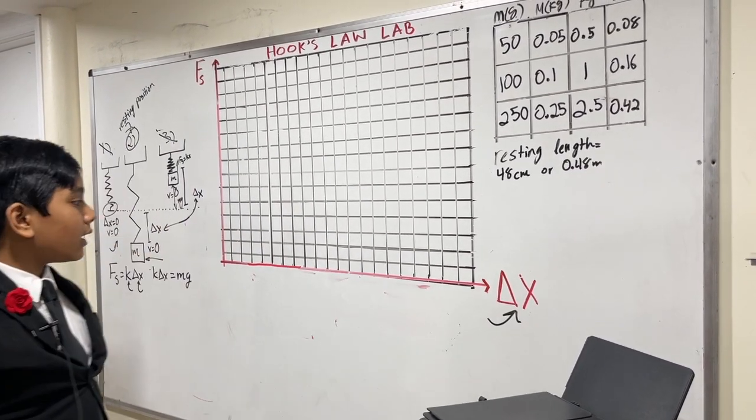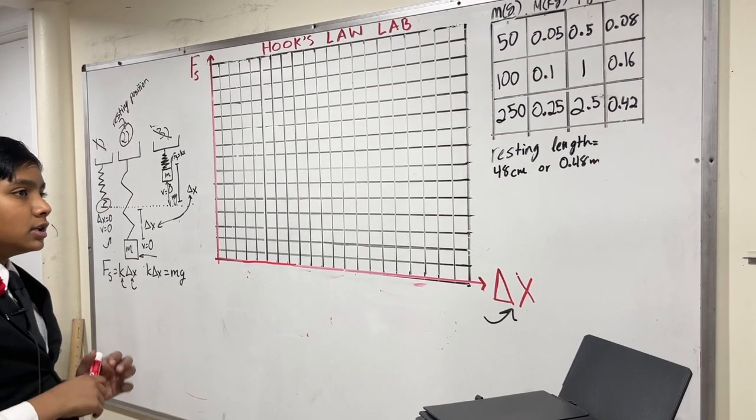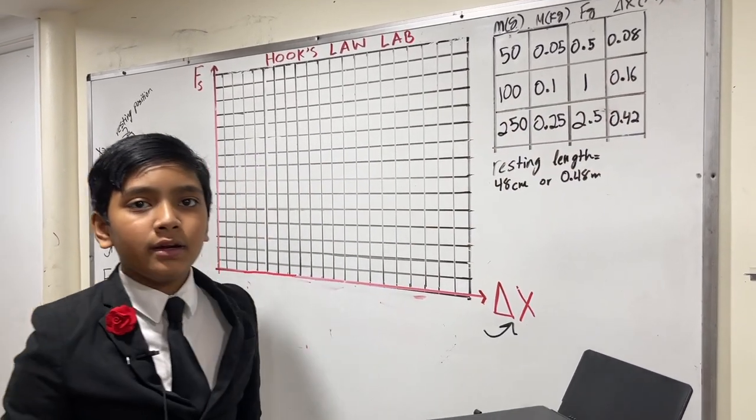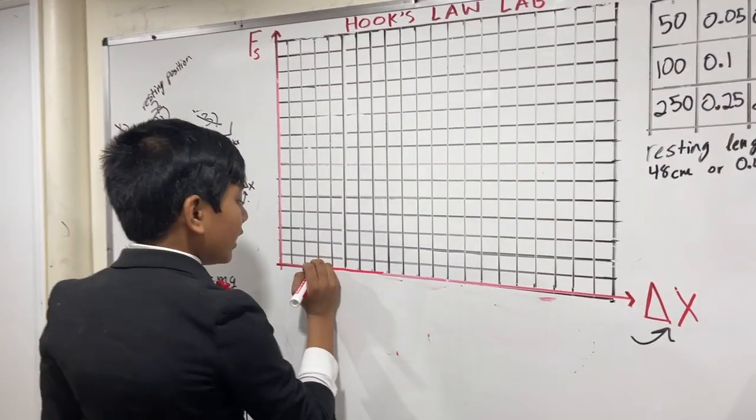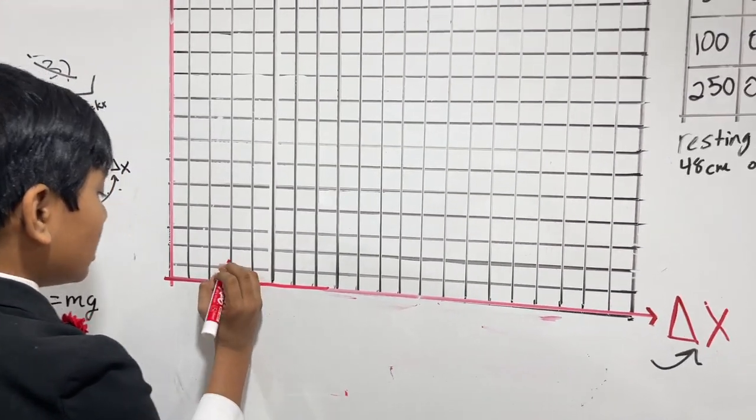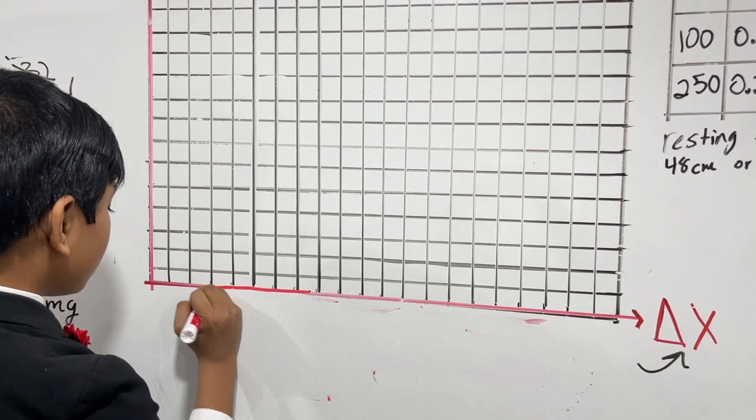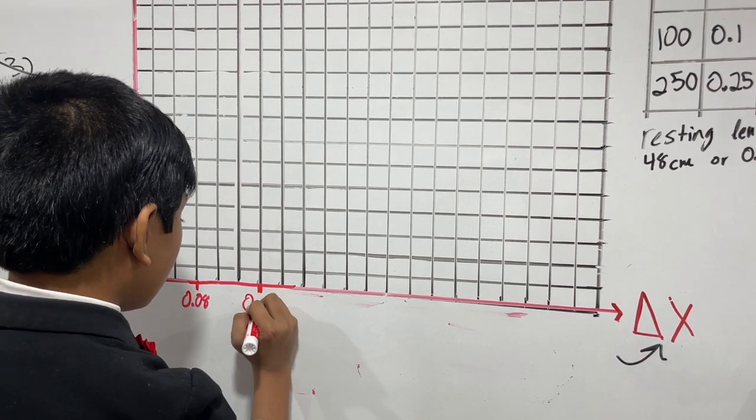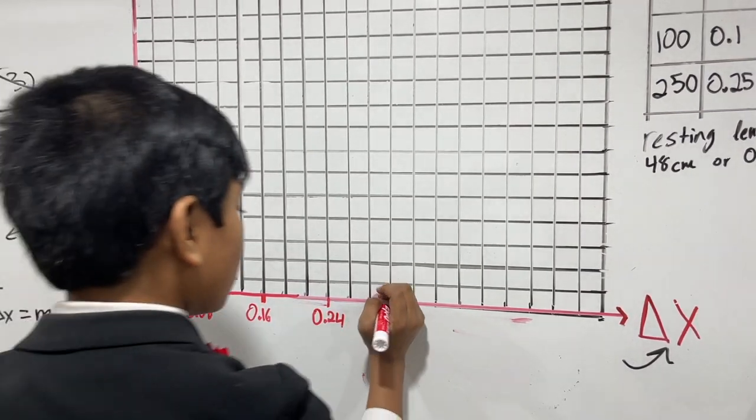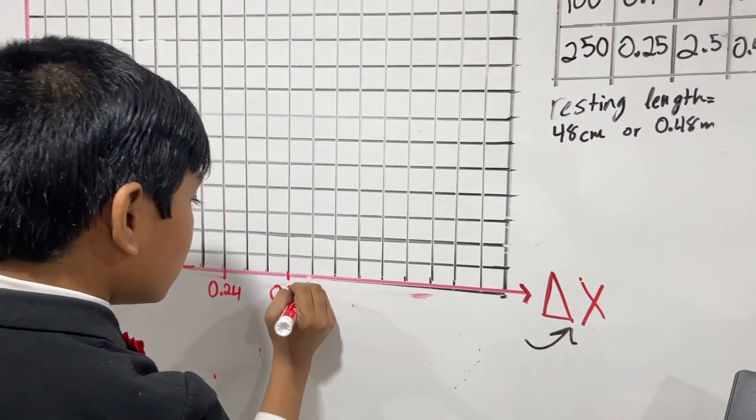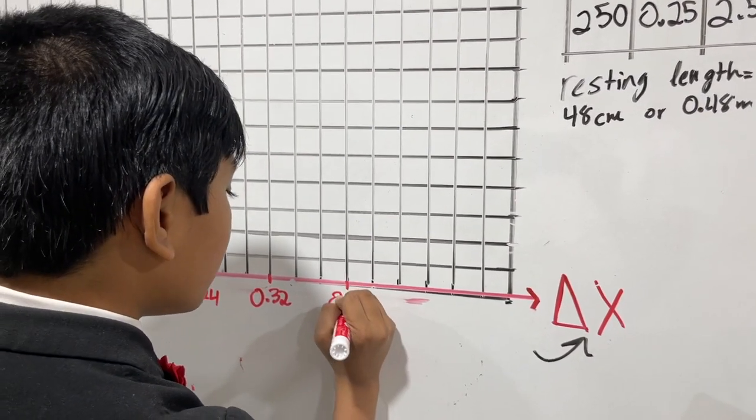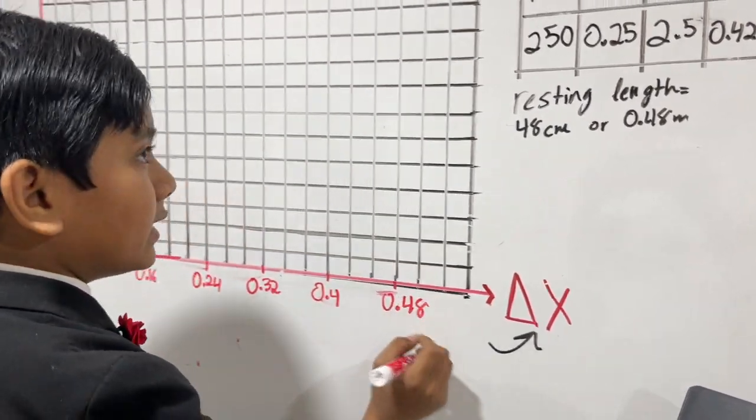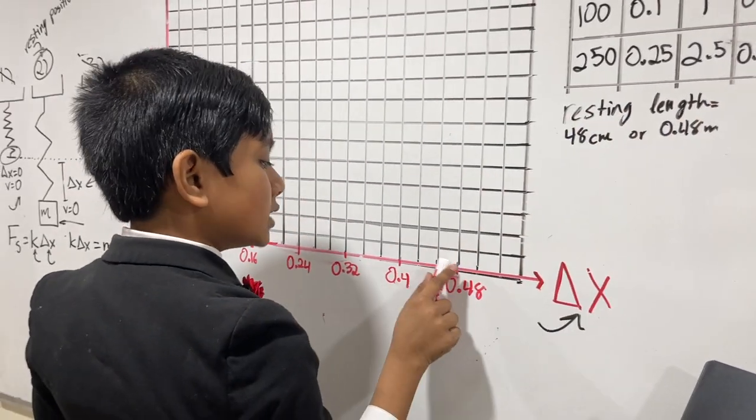All right, so now, let's begin drawing our graph. So, you might notice that all of these are even, and two of these are multiples of 0.08. So, let's use that to our advantage, make our increment on the x-axis 0.08. So, we're going to go three grid spaces for this one, 0.08 meters. And we're going to go three grid spaces for the next one, 0.16 meters. Again, 0.32, again, 0.40, and finally, 0.48.